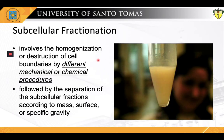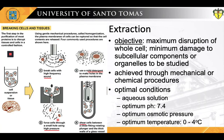Subcellular fractionation involves essentially the homogenization or destruction of cell boundaries by different mechanical or chemical procedures. This is then followed by the separation of the subcellular fractions according to different parameters, which may be according to the component's different mass, surface, or specific gravity. Subcellular fractionation generally entails three phases: extraction, homogenization, and centrifugation.